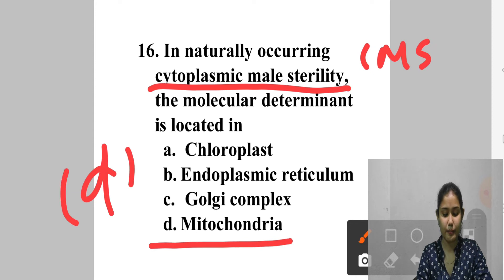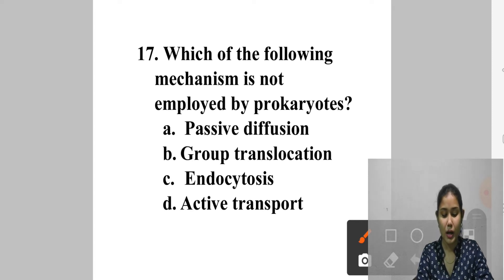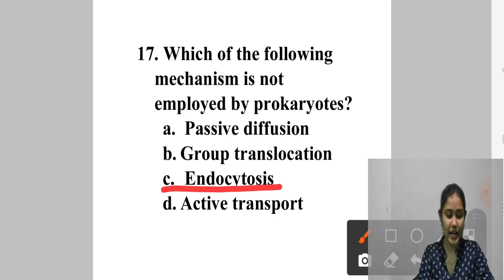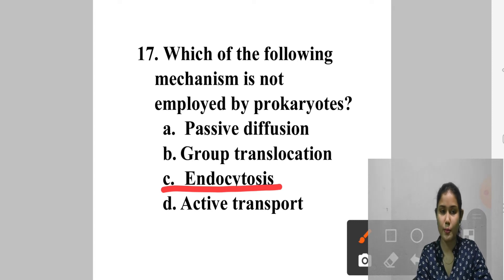Question 17: Which mechanism is NOT employed by prokaryotes? A. Passive diffusion, B. Group translocation, C. Endocytosis, D. Active transport. In endocytosis, the cell engulfs extracellular fluid including dissolved or suspended material. Eukaryotic cells take up molecules via endocytosis involving phagocytosis and pinocytosis, but endocytosis is not found in prokaryotes. Answer is option C — endocytosis.